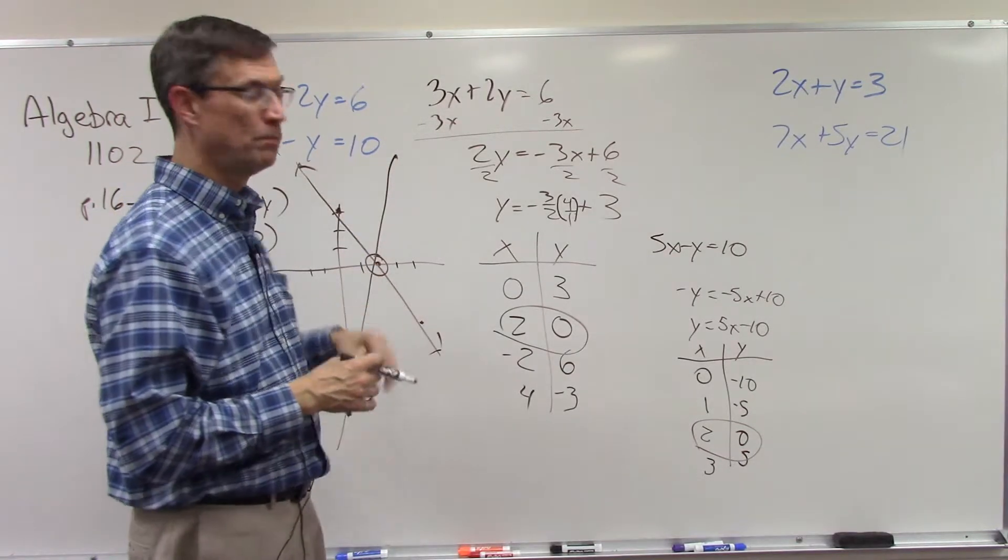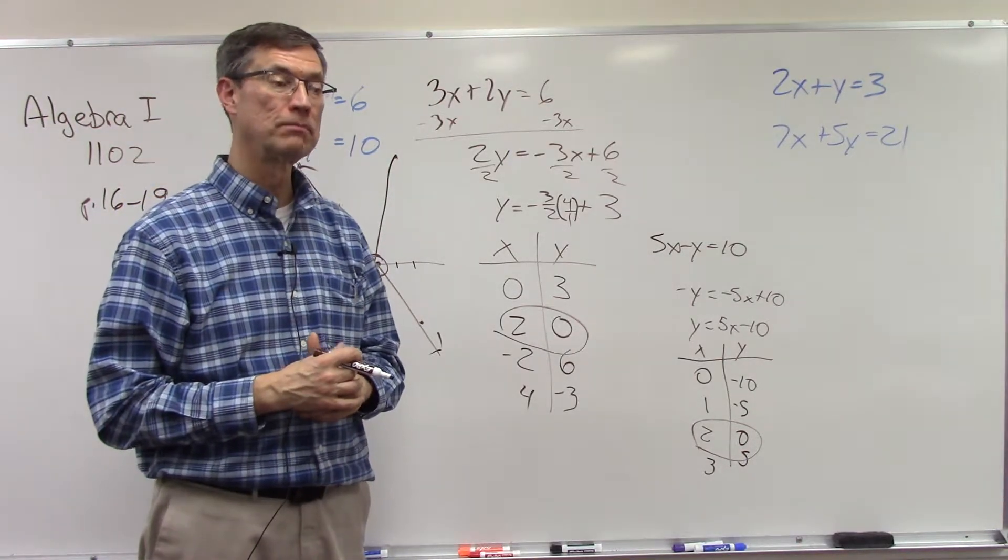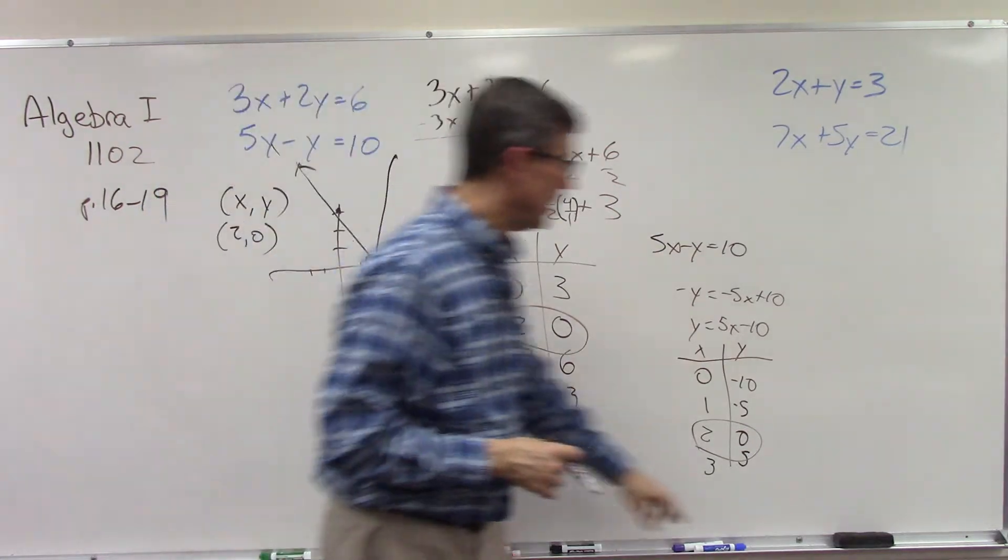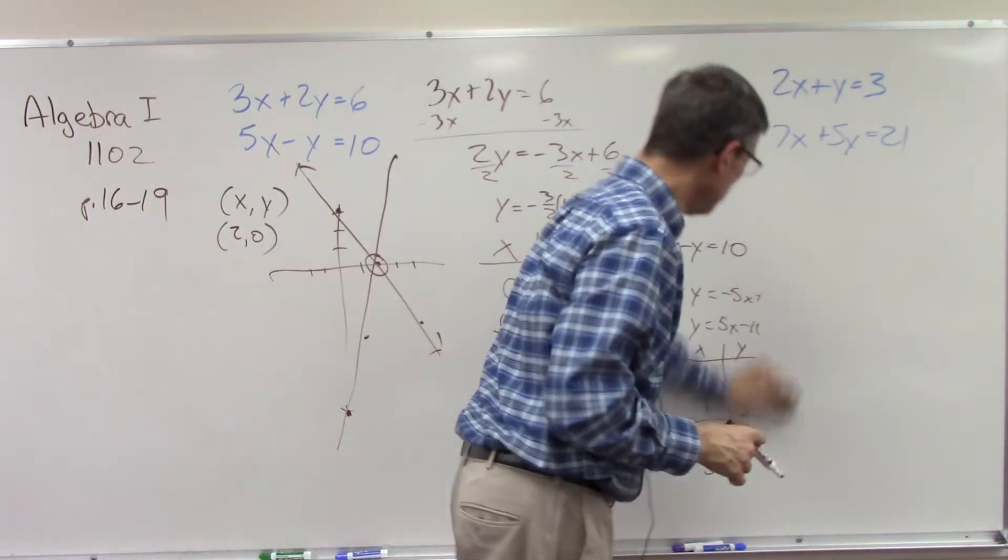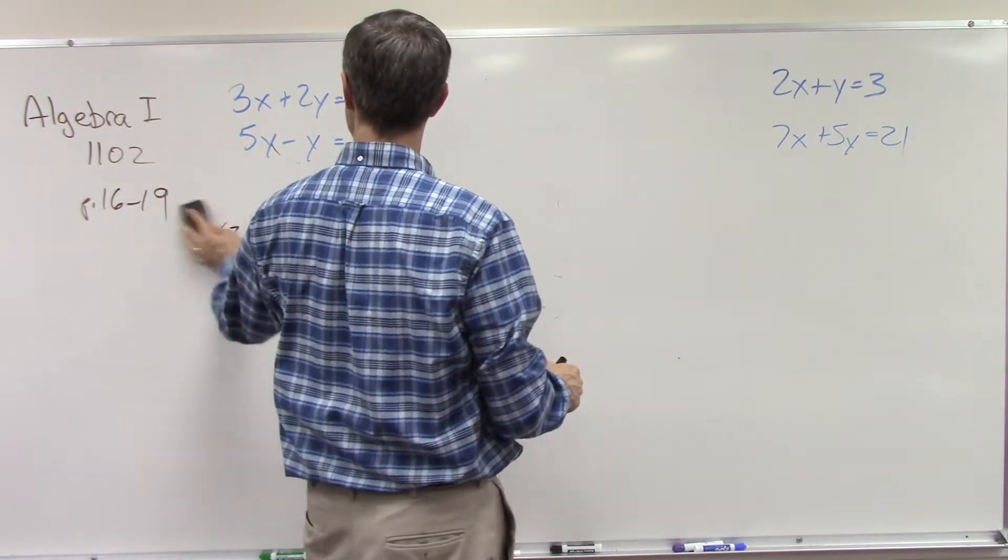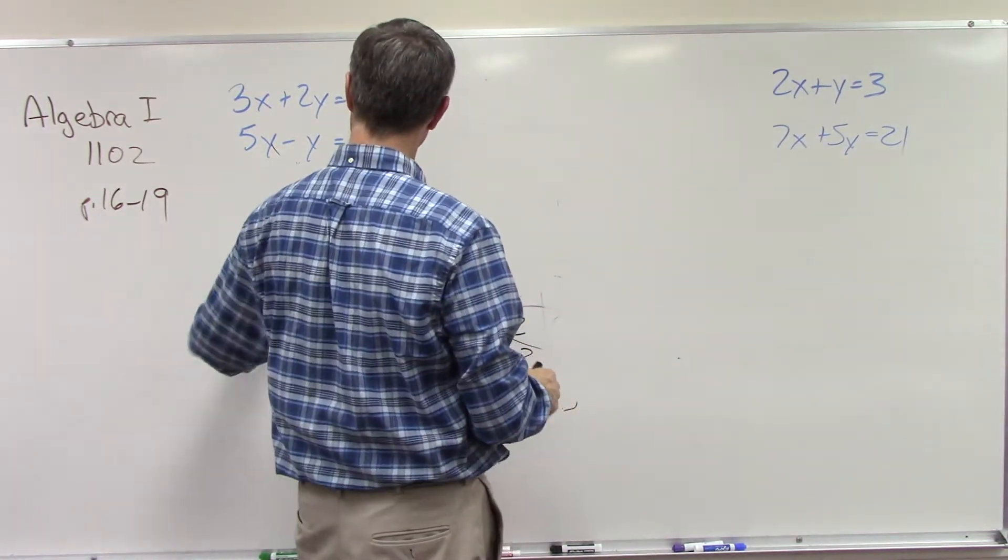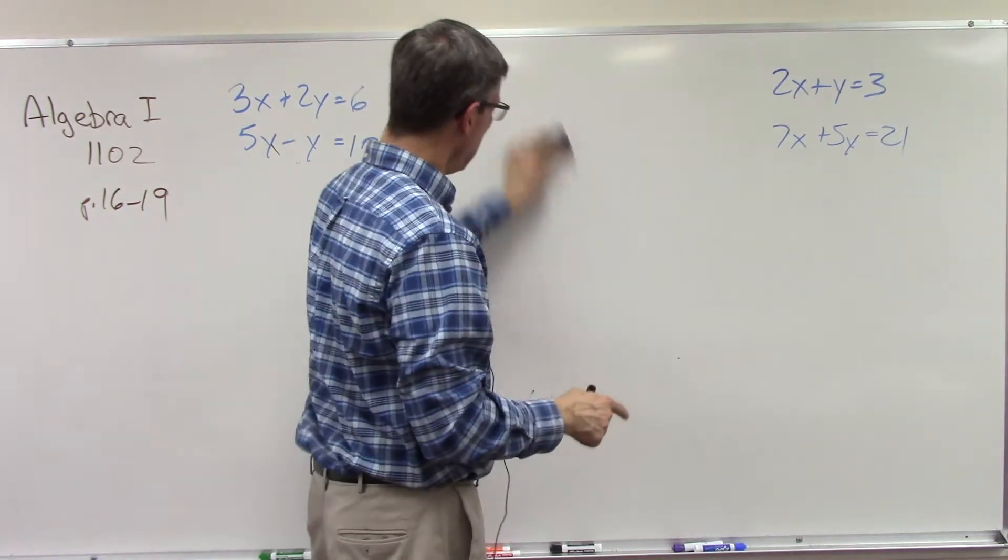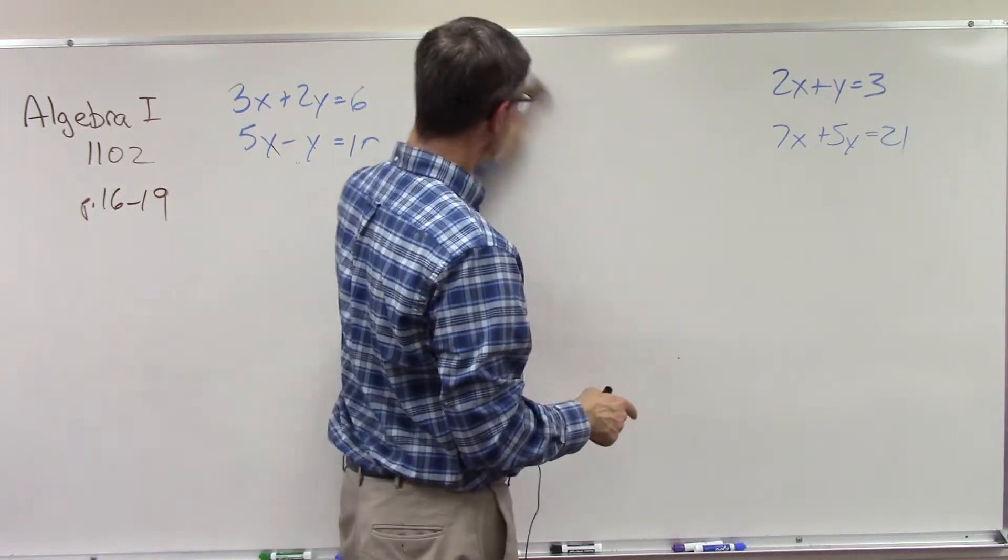That means that that point is the solution. We could literally write the answer as being a point xy, and that value would be 2 comma 0. We call that the solution for this set, these two lines. We found that by graphing them and then find the address of the point where they intersect. Now let's just start you off and then I want you to finish it.